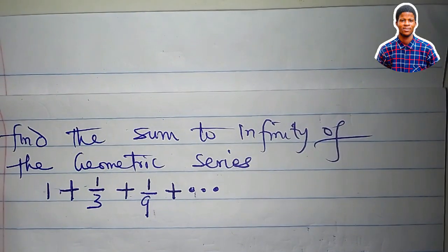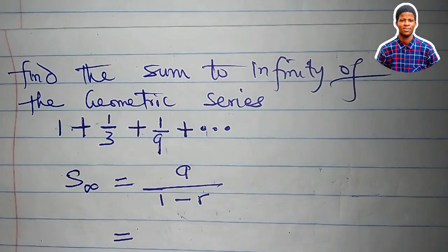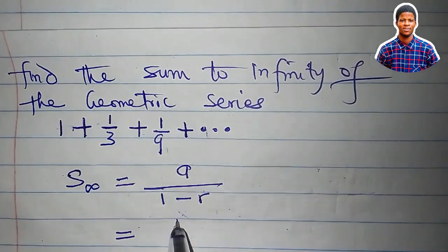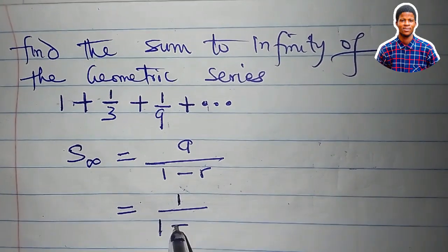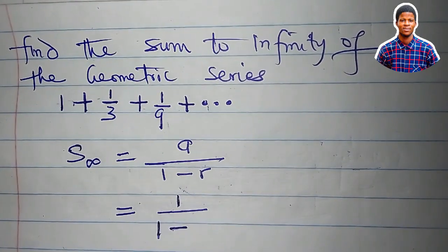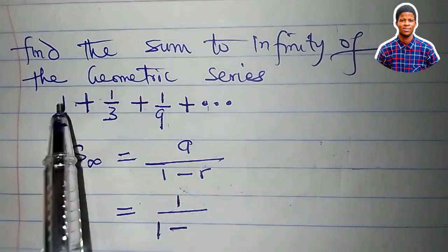What is the sum to infinity of this geometric series that we can see right now? The first term is 1. Then we have 1 minus what is the common ratio?